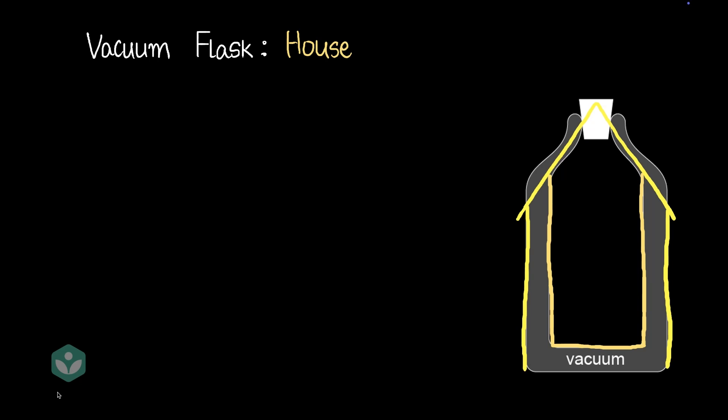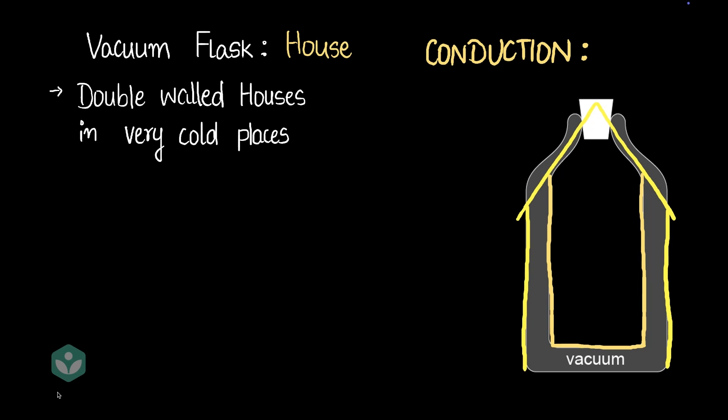Let's see how we can stop heat loss through conduction in our homes. One of the simplest ways is to have a double-walled house, and that's very common in cold places and places with AC rooms.